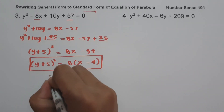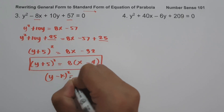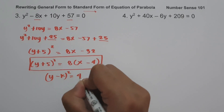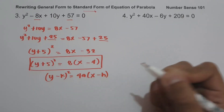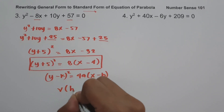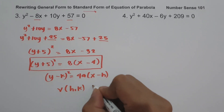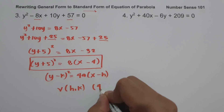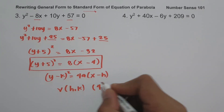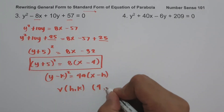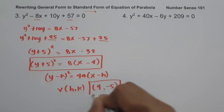This is written in the form (y - k)² = 4a(x - h). To find the vertex (h, k): h is +4, which is the opposite sign of -4, and k is -5. So the vertex is (4, -5).